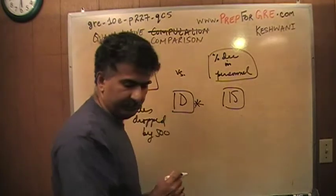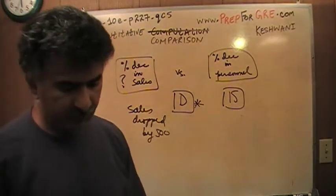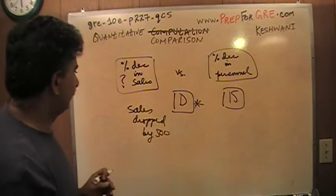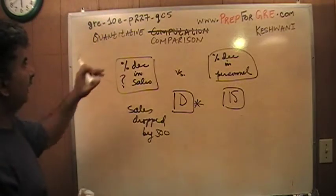The answer is D, it cannot be told. It cannot be ascertained based on the information that is given to us. That's it, the answer is D. Let's move on to number 6.